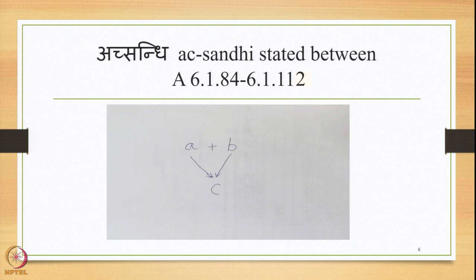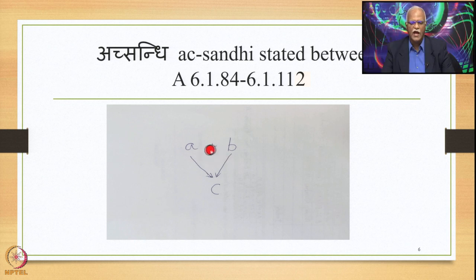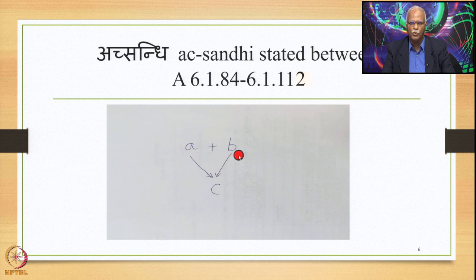Dvishthanika Ekadesha can be illustrated as a diagram: when you have a plus b — a immediately preceding b, both in close proximity and in Samhita mode — in place of both a and b, one substitute c is placed. The input is a plus b and the output is just c.